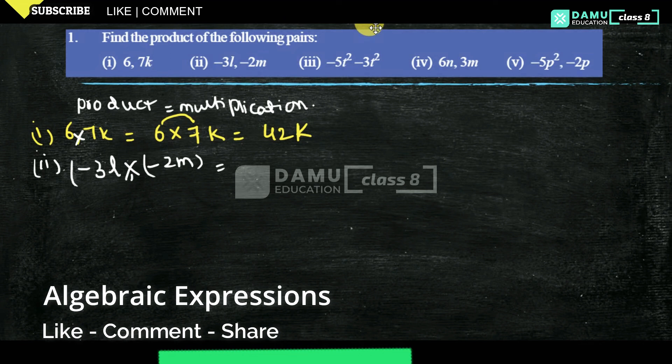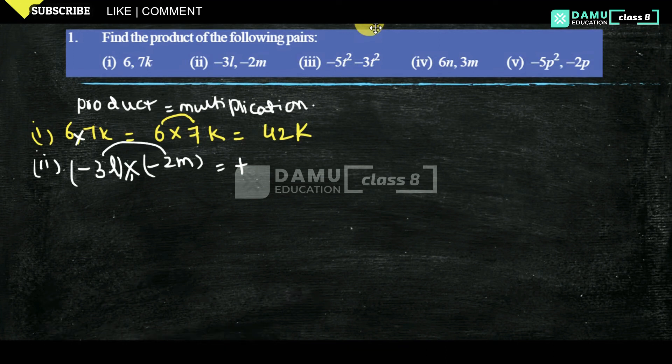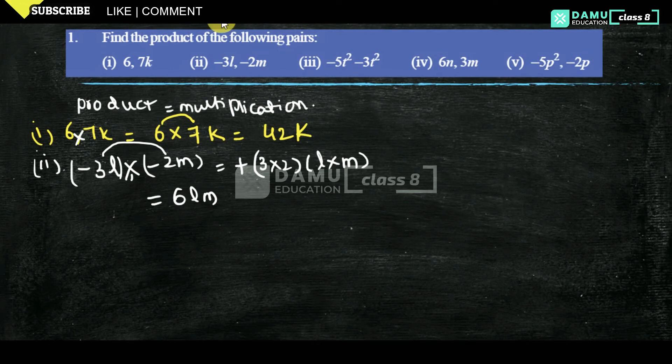3 into 2, that is 3 twos are 6, 3 into 2, and L into M. That will be equal to 3 twos are 6 LM. 3 twos are 6 LM. Next, the third one.